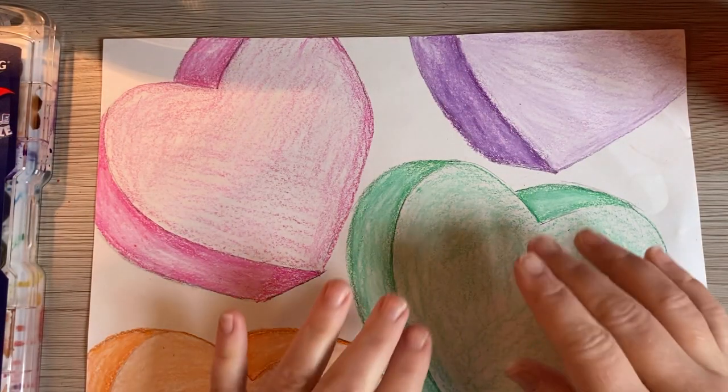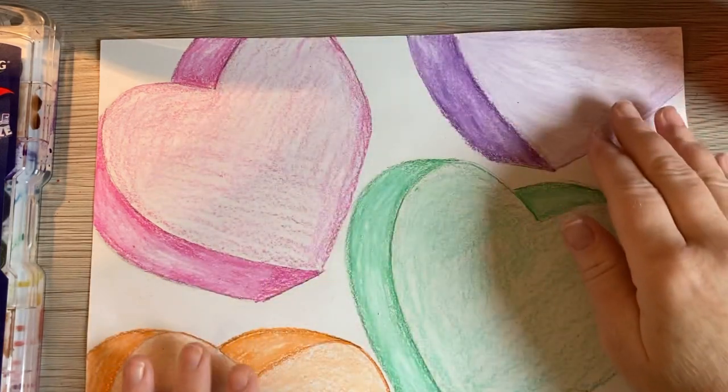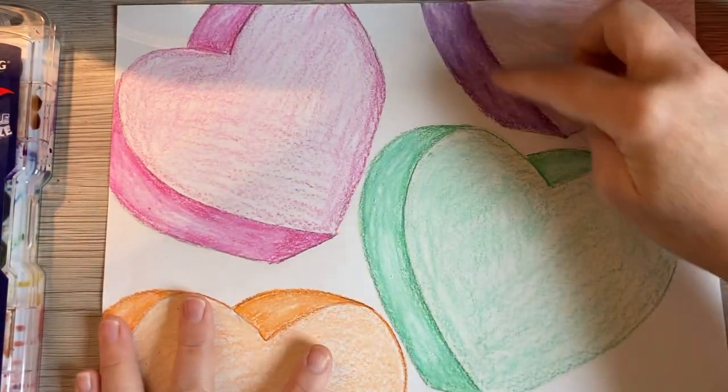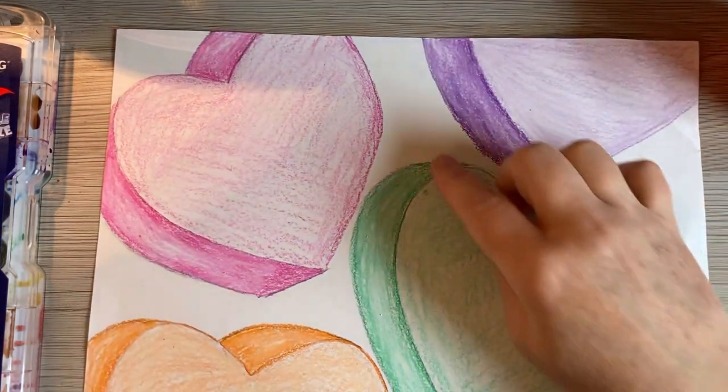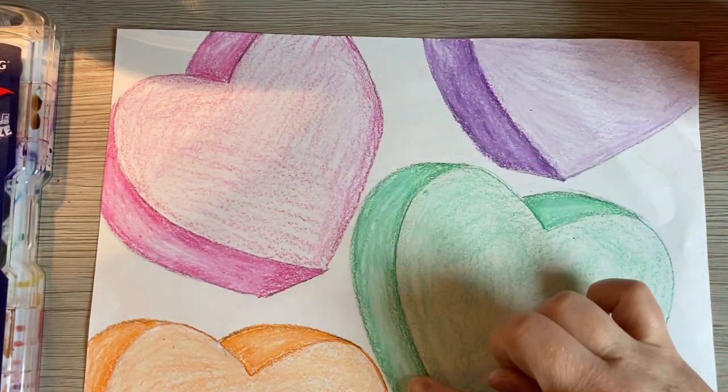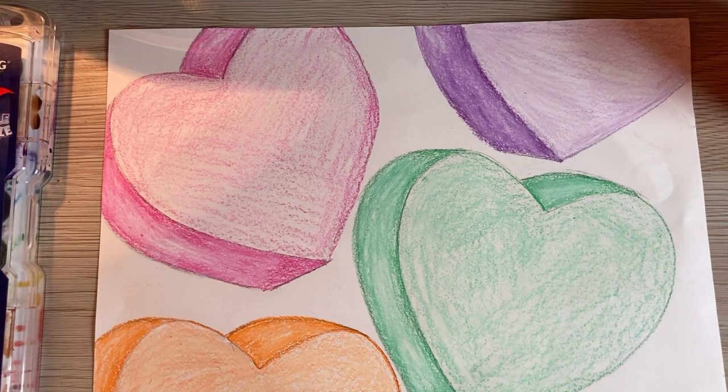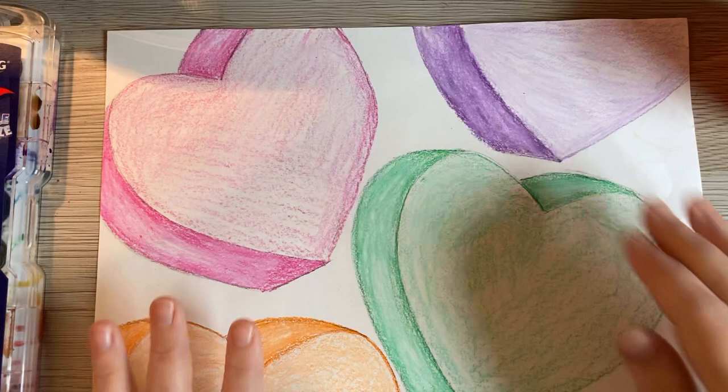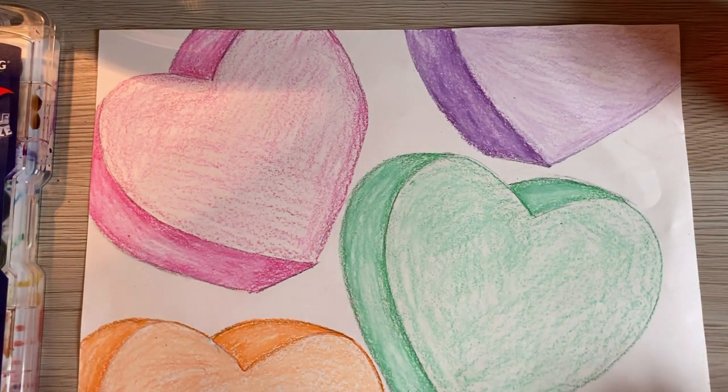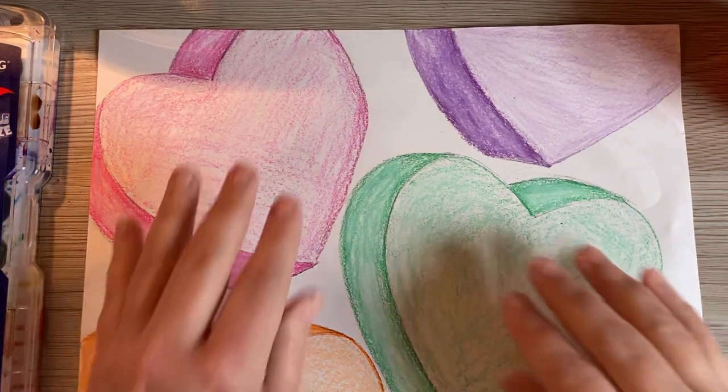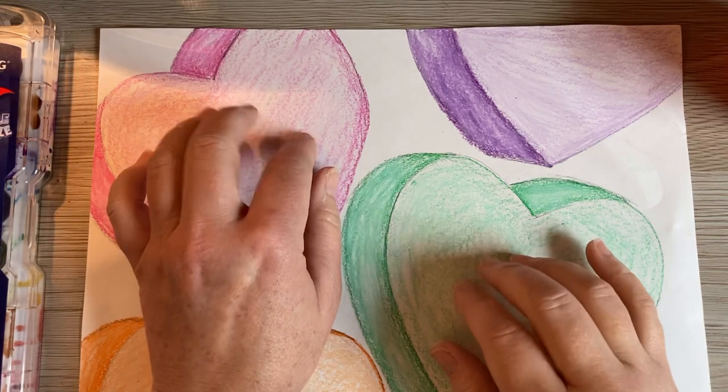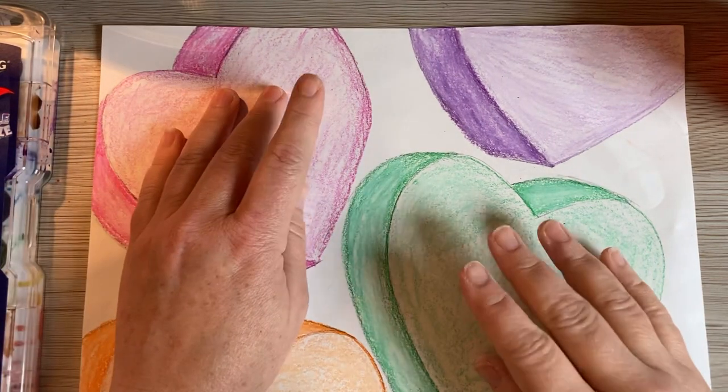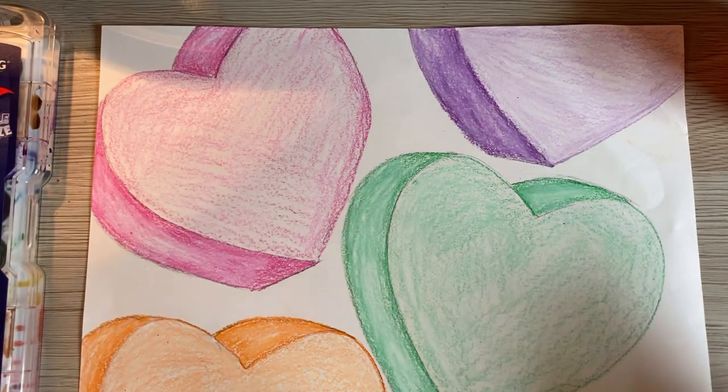So once you've gone through and colored all of your conversation candy hearts and given them some nice value along the edges of the three-dimensional shape, you need to think about your background. Now we're not going to leave our paper blank. We want to do something in the background, but we want to make sure we do something that doesn't take away from the hearts. We want to make sure they are given the emphasis because this is the focal point.